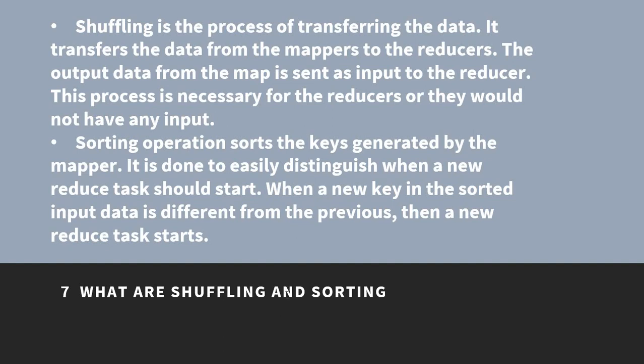What are shuffling and sorting? Shuffling is the process of transferring data from mappers to the reducers. The output data from the map is sent as input to the reducer. This process is necessary for the reducers, or they would not have any input. Sorting operation sorts the keys generated by the mapper. It is done to easily distinguish when a new task should start — when a new key in the sorted input data is different from the previous one, a new reduce task starts.